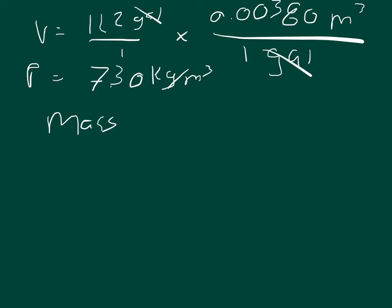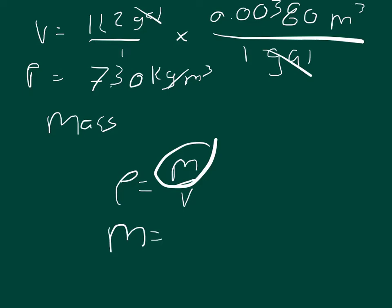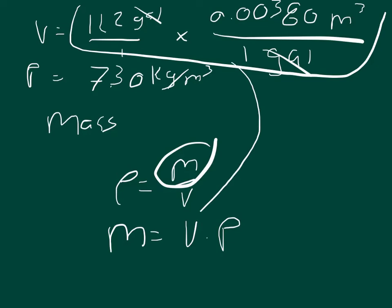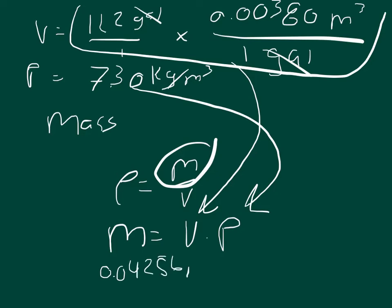We know that density equals mass over volume, so we can solve for mass: mass equals volume times density. Taking our converted volume of 0.04256 cubic meters and multiplying by 730 kilograms per cubic meter, we get 31.0688 kilograms.